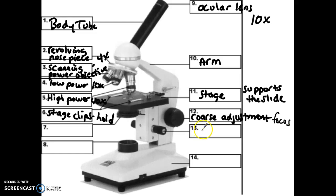Whereas number 13 is fine adjustment. Once again, it's used for focus, but to delineate the difference between these two, this would be more or less used at the high power. You would never use coarse adjustment at a high power because there is, on larger, more expensive microscopes that wouldn't be used for high school students, the objective lens could actually go right through the stage.